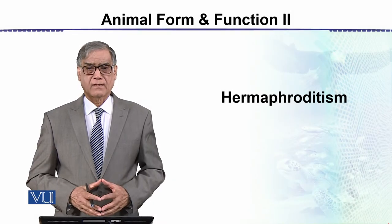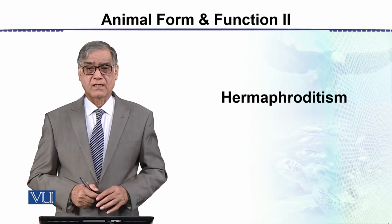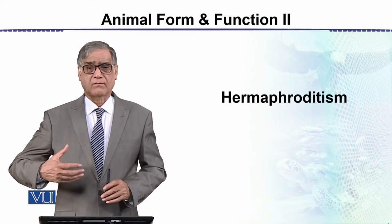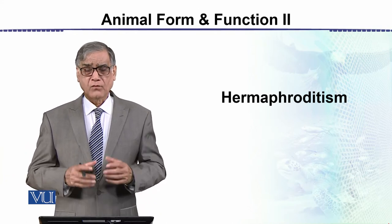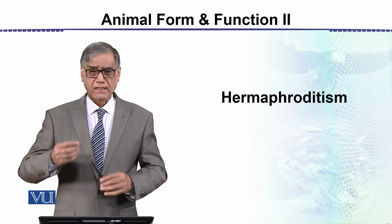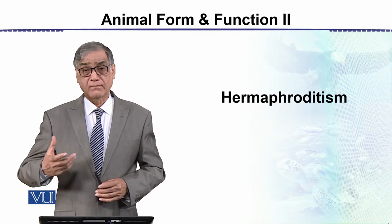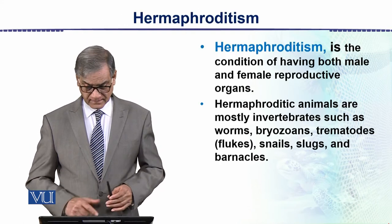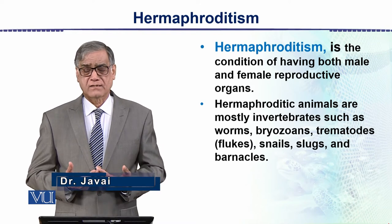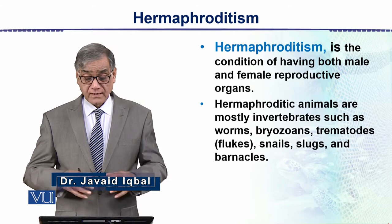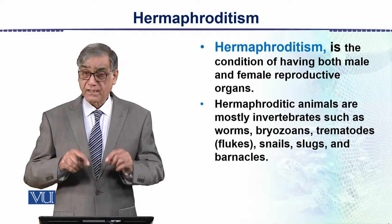This topic is hermaphroditism — hermaphrodite animals. First, we have to understand what hermaphrodite animals are. These are animals that are both sexes in one animal, so both individuals have the ability to produce sperms as well as eggs. This condition is called hermaphroditism — a condition of having both male and female reproductive organs in the same individual.